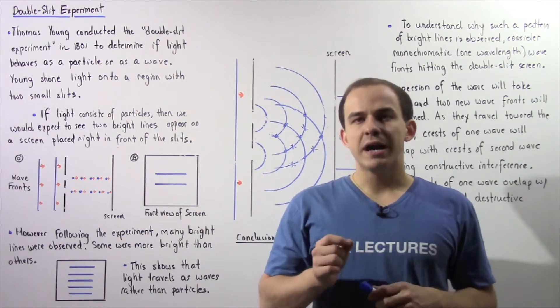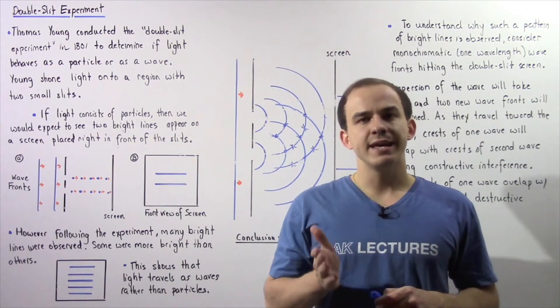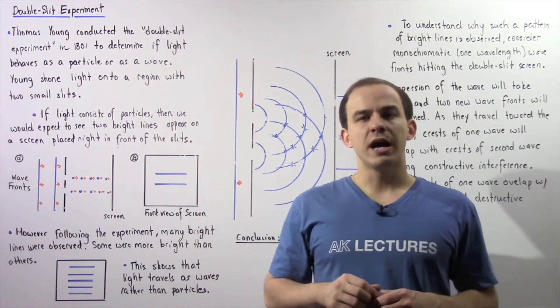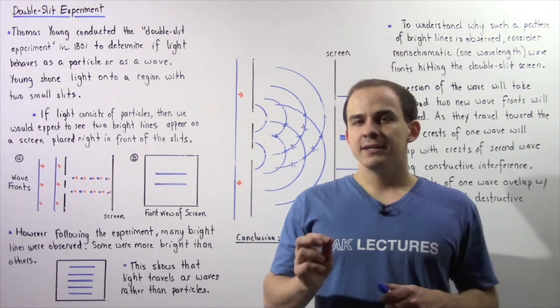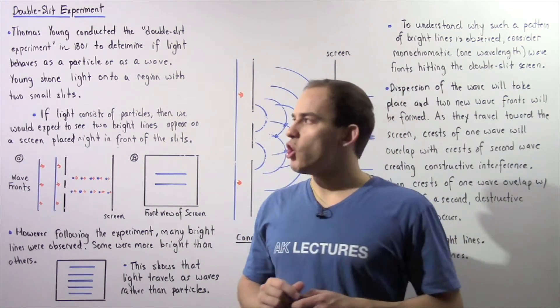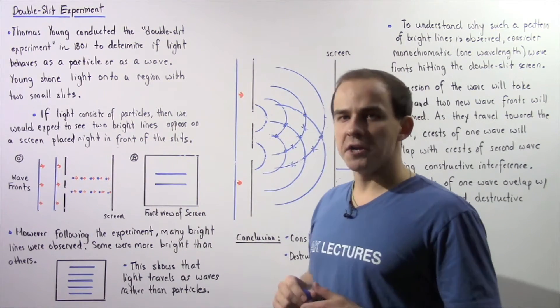In 1801, an Englishman by the name of Thomas Young set out to determine whether light travels as a wave or as a particle. He conducted an experiment that became known as the double slit experiment.